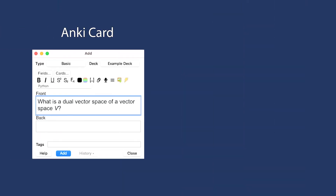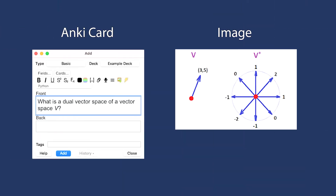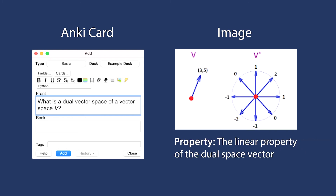So let's continue to edit our cards and choose the first question from the table. We'll use an image that shows some really important characteristics about the definition of a dual space vector — specifically the linear property of the dual space. I hope you liked the video and learned a little more about Anki and how to study with active recall. This is the first video of a series of five videos about Anki and active recall.